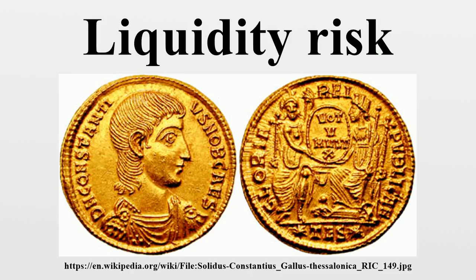Another example is the 1993 Metallgesellschaft debacle. Futures contracts were used to hedge an over-the-counter (OTC) obligation. It is debatable whether the hedge was effective from a market risk standpoint, but it was the liquidity crisis caused by staggering margin calls on the futures that forced Metallgesellschaft to unwind the positions. Accordingly, liquidity risk has to be managed in addition to market, credit, and other risks.